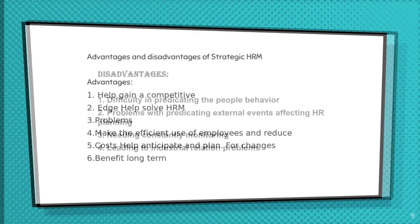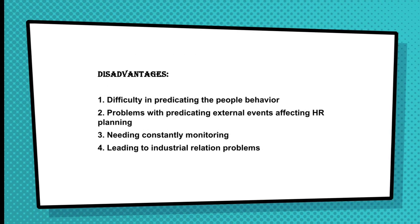The disadvantages of HRM: the first is difficulty in predicting people's behavior. The HRM system is required to manage human behavior, but there is no uniformity in human behavior as different people are categorized in distinct ways. The second disadvantage is problems with predicting external events, as human resource management lacks universal academic approval due to its recent origin.